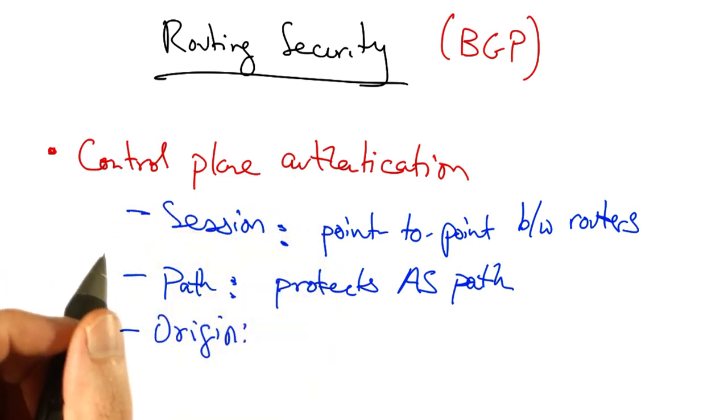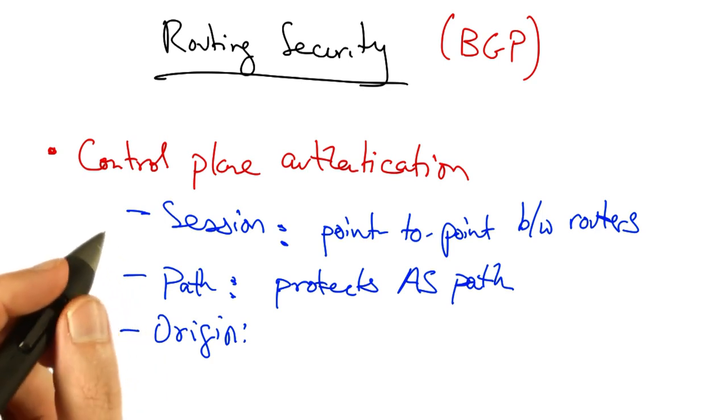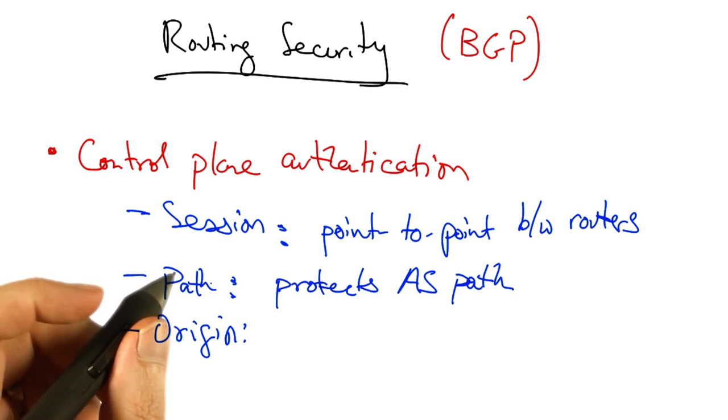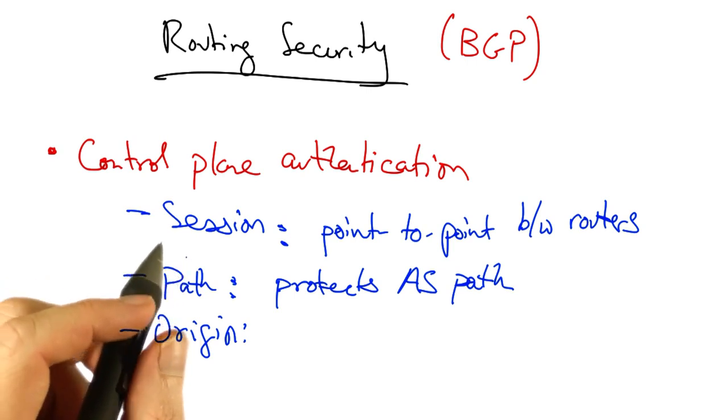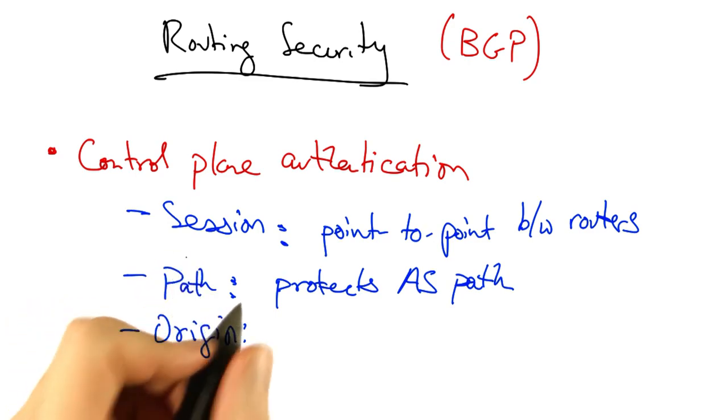Another type of authentication is origin authentication, which protects the origin AS in the AS path, effectively guaranteeing that the origin AS that advertises a prefix is in fact the owner of that prefix.